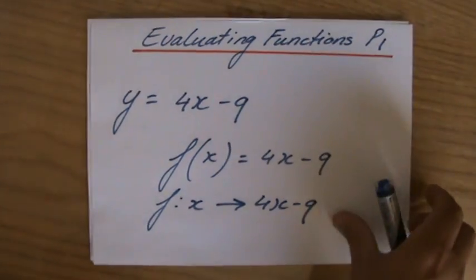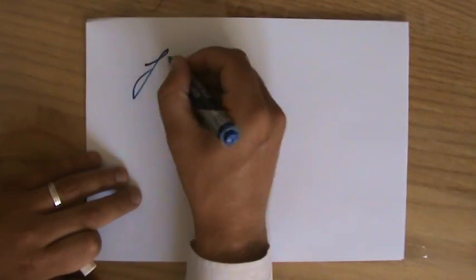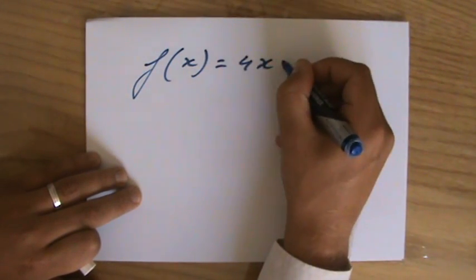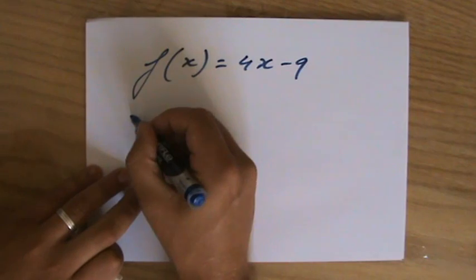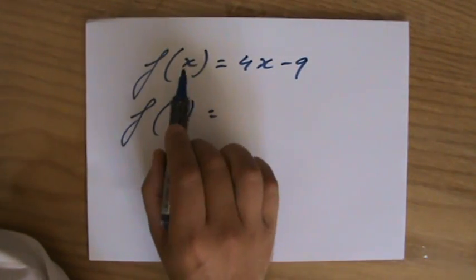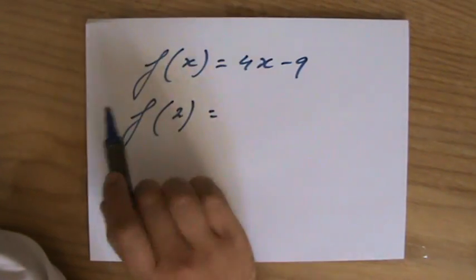Now, why is that useful? Why is that a good way to write it? Because if I write it down again, 4x minus 9, we can now say, for the function where x is the variable, 4x minus 9, let's now evaluate it for x is 2.